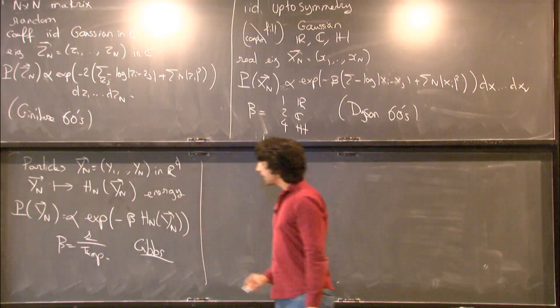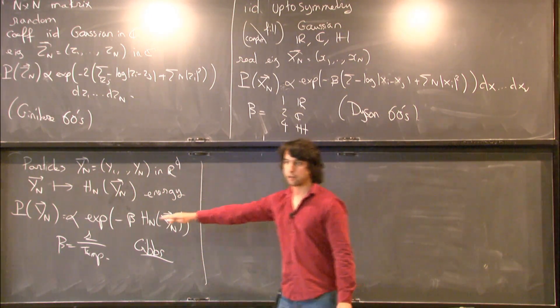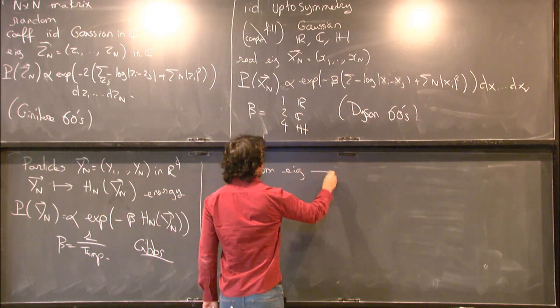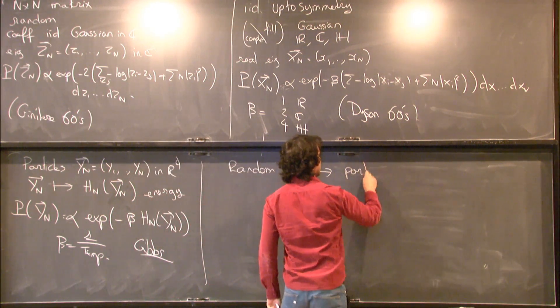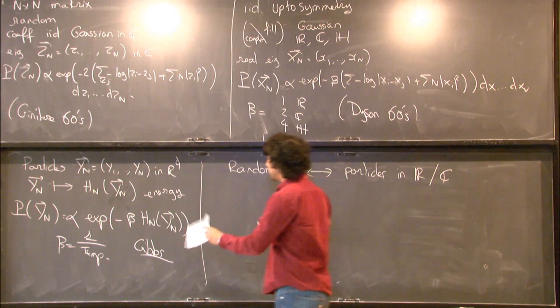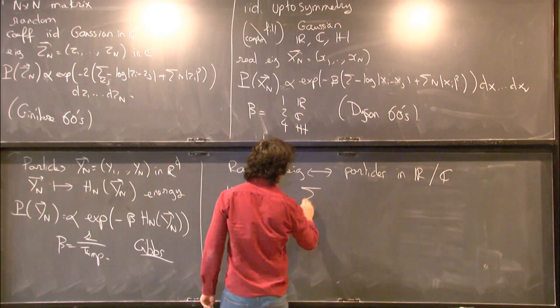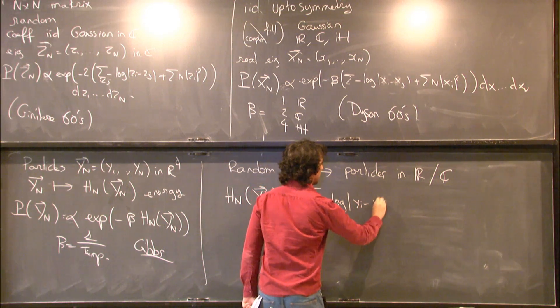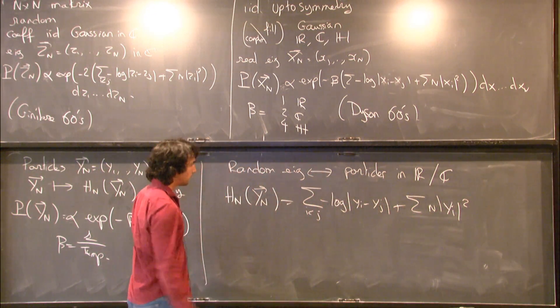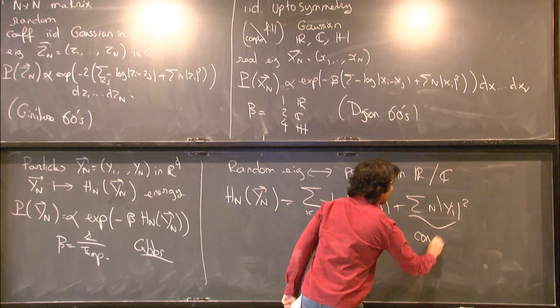So as we see, maybe the summary of this is that random eigenvalues of random matrices, they behave exactly like particles in a statistical physics system. So random eigenvalues, in a sense, for certain models, are equivalent to particles in R or in C. And the energy would be, well, whatever is written here. So this term. So this is the logarithmic interaction. And this is what we call a confining potential.